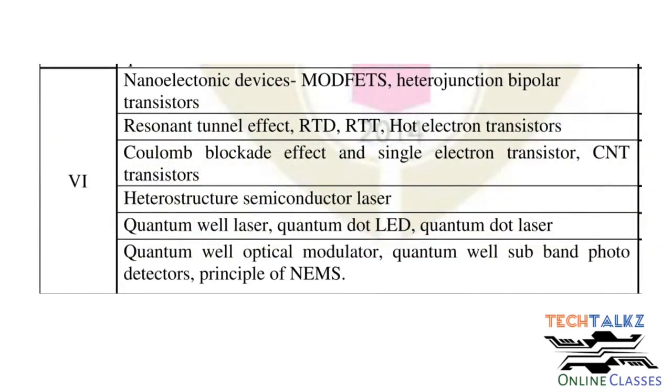Then in module 6, we will see different nanoelectronic devices like MOSFETs, RT diodes (that is resonant tunnel diodes), RT transistors, single electron transistors, quantum well lasers, quantum dot LEDs, photodetectors, then principle of nanoelectromechanical systems, that is NEMS.